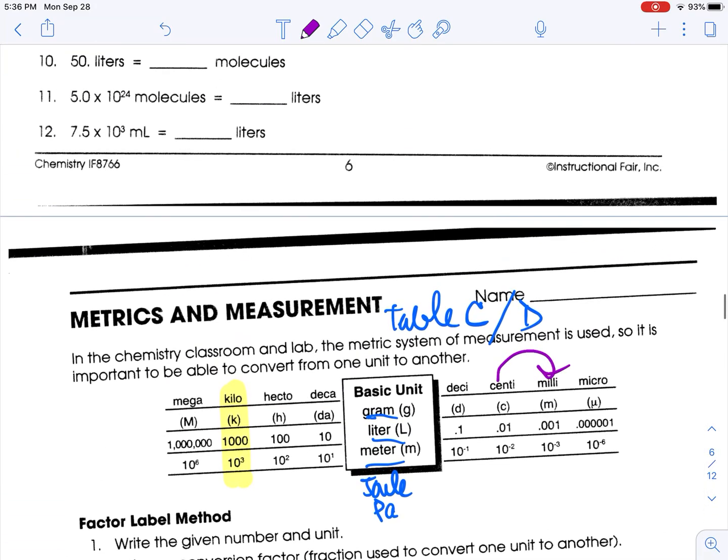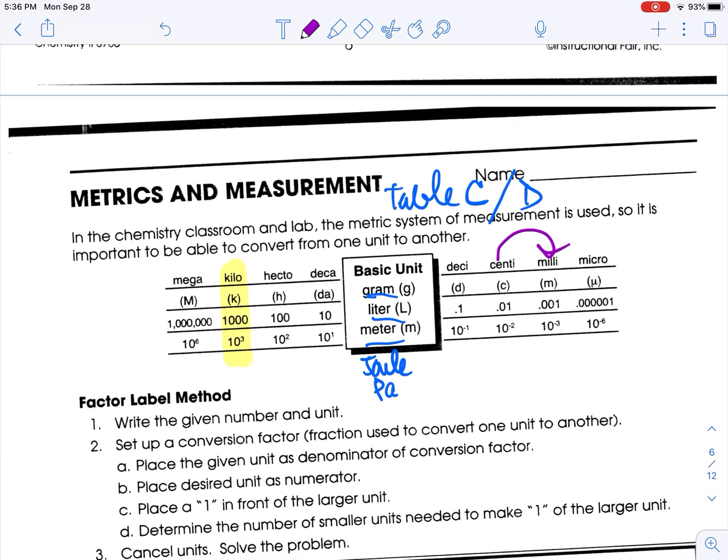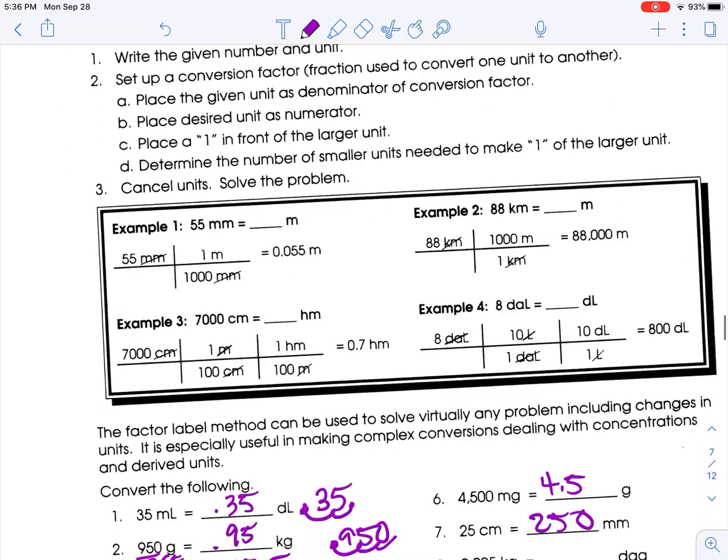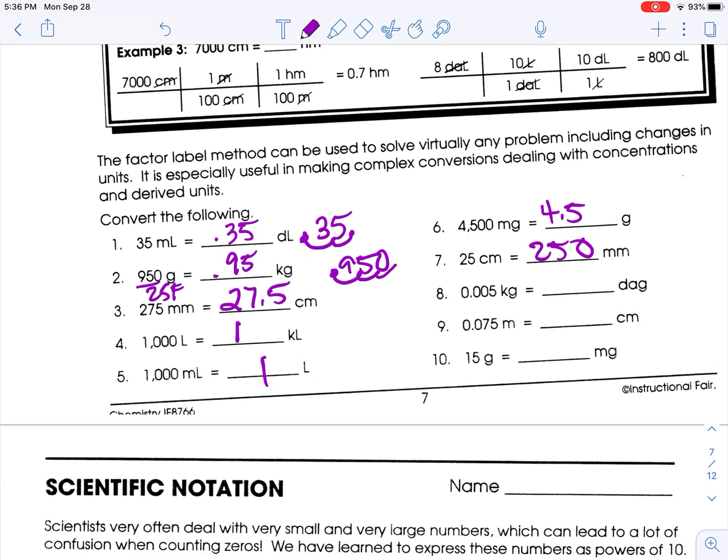Kilograms to decagrams. Kilograms to decagrams. So one, two spots to the right. So that's going to be one, two point five decagrams.